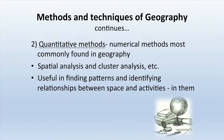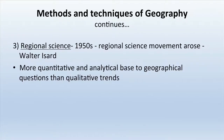The second method is the quantitative method, where numerical techniques such as spatial analysis and cluster analysis are widely used in geography to find patterns and identify relationships between space and activities. The third is regional science, which emerged in the 1950s with the regional science movement started by Walter Isard. It brought a more quantitative and analytical base to geographical questions, though qualitative aspects supplement and complement quantitative techniques.